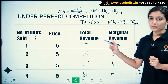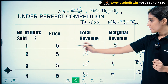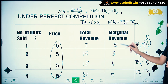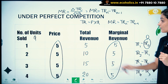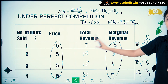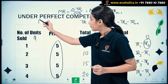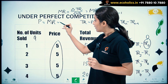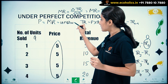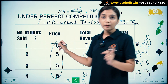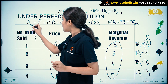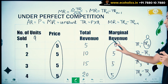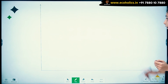From this table, we observe that price is constant at 5, marginal revenue is also constant throughout, and price equals marginal revenue in all cases. Therefore, Price = Marginal Revenue = constant (which is 5 here). We also know that price equals average revenue as well.